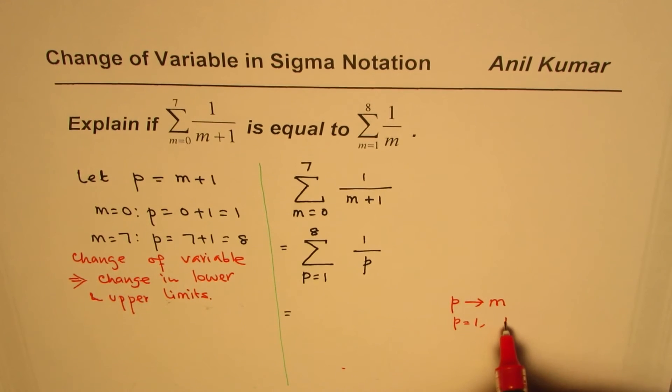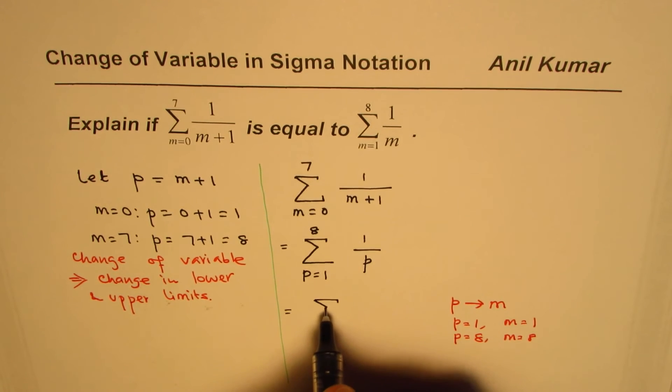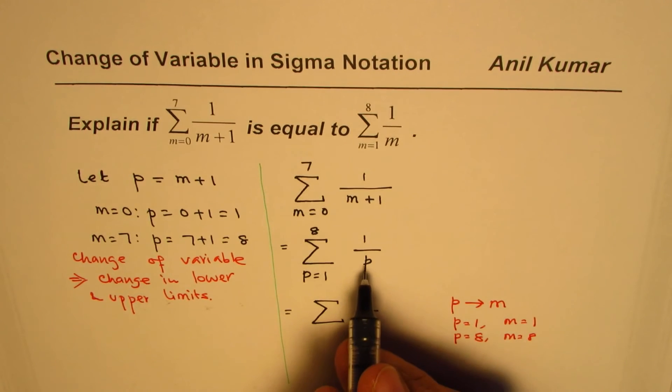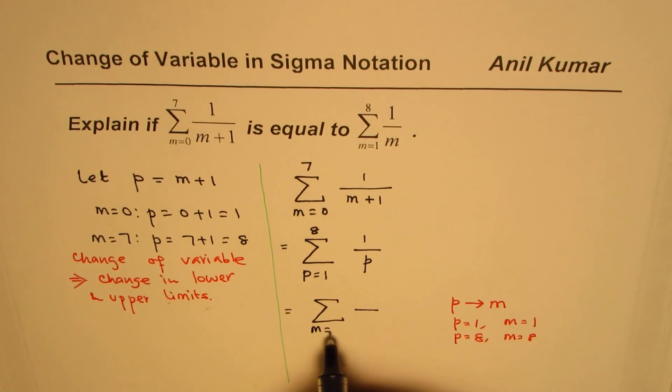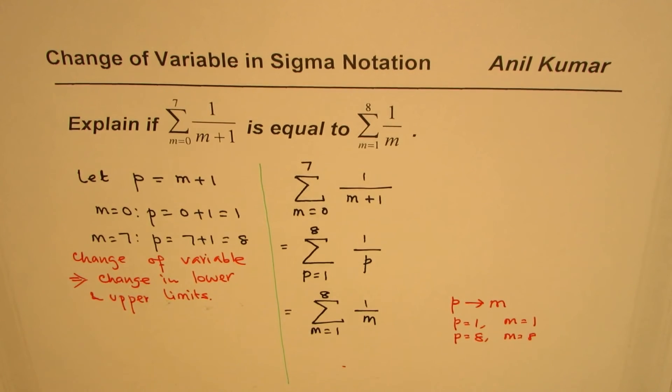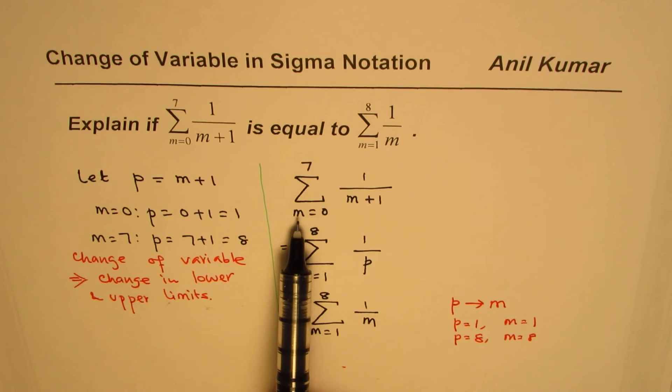Therefore I can write this summation as, instead of p I'm changing it to m. So I'll replace this p by m: m equals 1 to 8, 1 over m. Do you see that? So we have shown that these two expressions are the same.